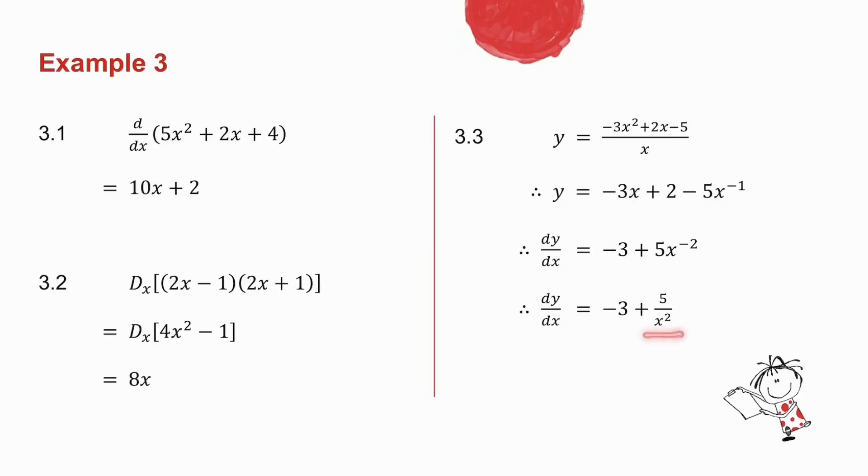And then I sort out the x to the minus 2. Given y equals, I divide it by x, so it's still y equals. I took the derivative, so it became dy by dx, and my answer is dy by dx equals minus 3 plus 5 over x squared.